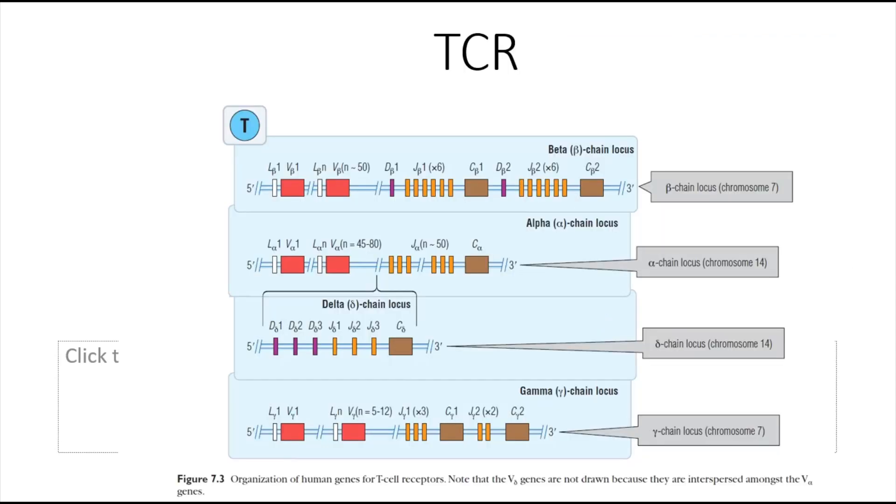For simplification, you can assume that the alpha chain resembles the light chain of the antibody and the beta chain resembles the heavy chain. The beta chain contains the L, V, D, and J segments plus the constant region, while the alpha chain lacks the D segment.